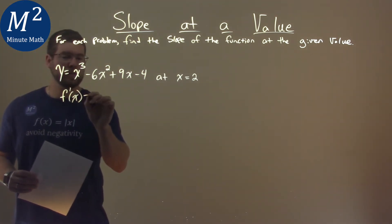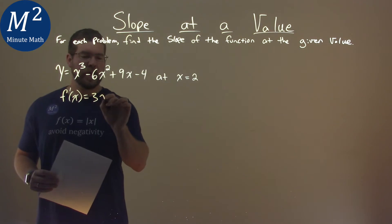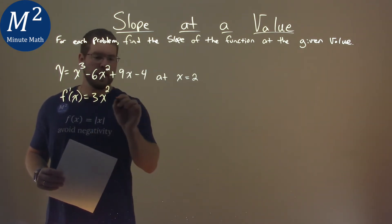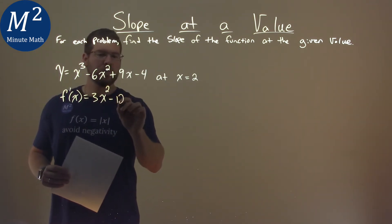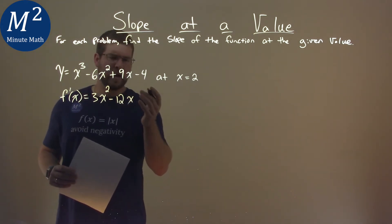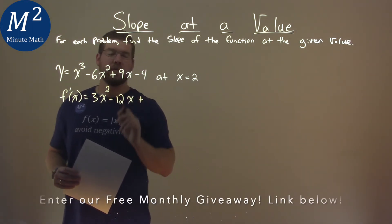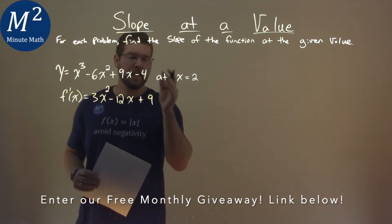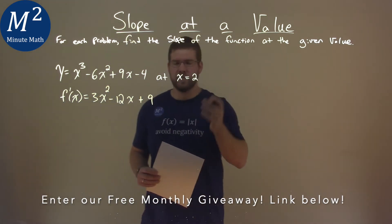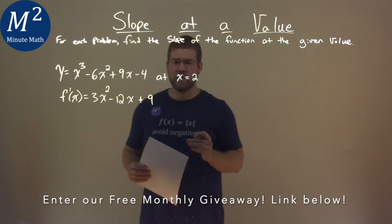f prime of x is equal to—power rule down—3x squared, minus 2 times 6 is 12x to the first power, don't need to write that. Derivative of 9x is 9, and then the constant, negative 4, just becomes 0. So pretty easy here to have our derivative.